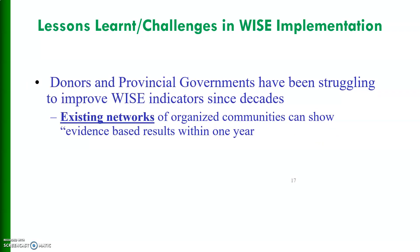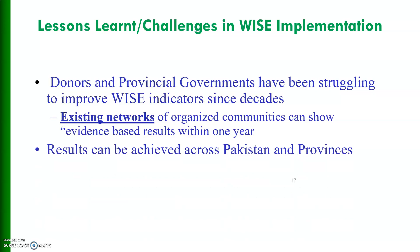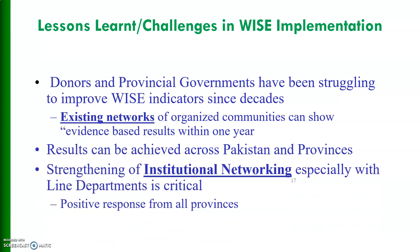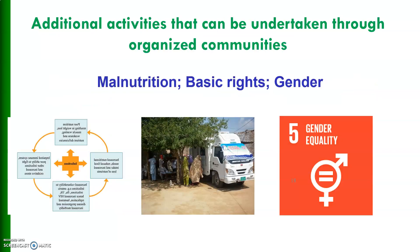Lessons learned in WISE implementation: Donors and provincial governments have been struggling to improve WISE indicators for decades. Existing networks of organized communities can show evidence-based results within one year. Results can be achieved across Pakistan and all provinces. Strengthening of institutional networking, especially with line departments, is critical, and there should be a positive response from all provinces. Additional activities that can be undertaken through organized communities target malnutrition, basic rights, and gender equality.